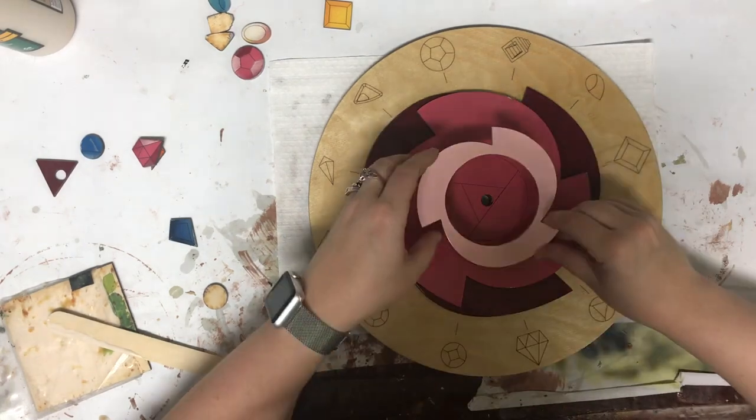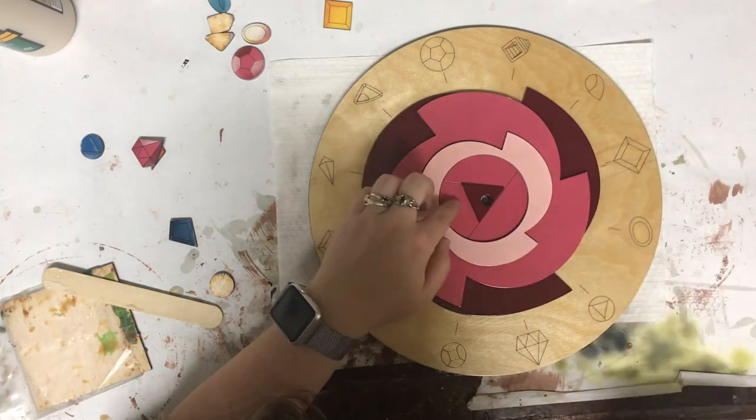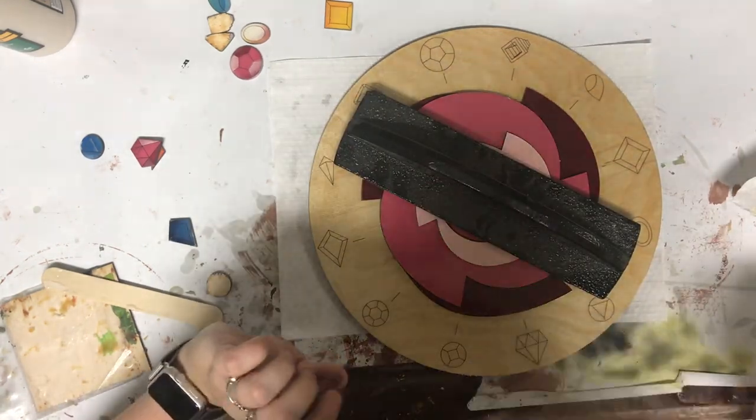Then the lightest pink part. And finally the little inner triangle. Big heavy weight to hold it flat while the glue sets.